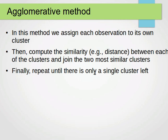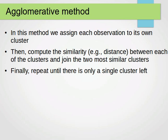The agglomerative method is the opposite of the divisive approach. We assign each observation its own cluster. Then we compute the similarity — for example, the distance between each of the clusters — and we join the two most similar clusters. We find the two most similar, merge them together, and keep repeating.